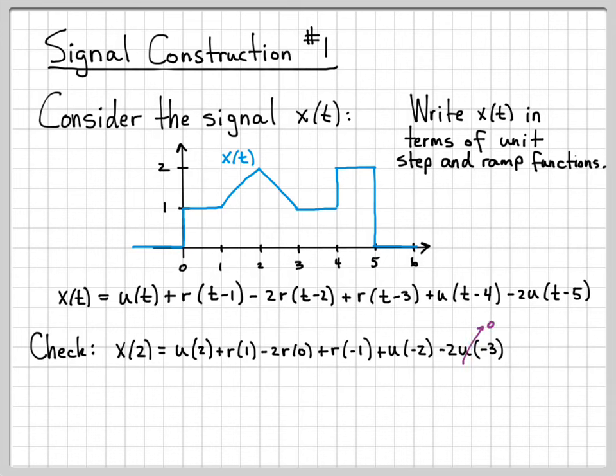If we look at this, we know that the unit step evaluated at negative time is zero. So that term's zero, so that term's zero. Ramps are also off for negative time, so that's zero. The ramp at time zero is equal to zero. So all these terms go away. And what I'm left with is the unit step at time two is equal to one, and the ramp at time one is equal to one. So I get two.